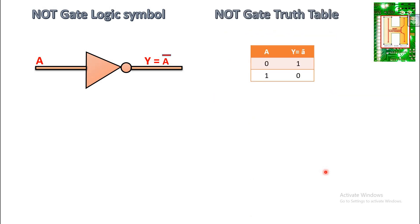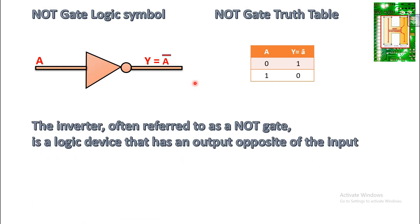Let us see the truth table of the NOT gate. A is the input and Y equal to A complement is the output. When the input is zero, the output is one, and when the input is one, the output is zero. Hence the output is always a complement or inverse. The NOT gate, often referred to as an inverter, is a logic gate device that has an output opposite to the input.